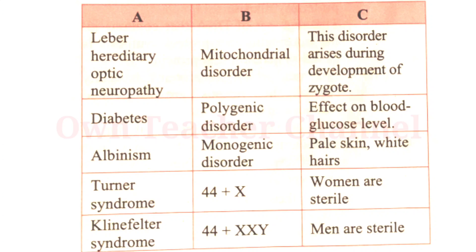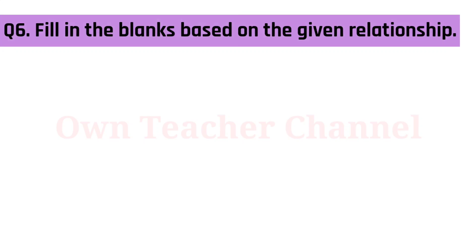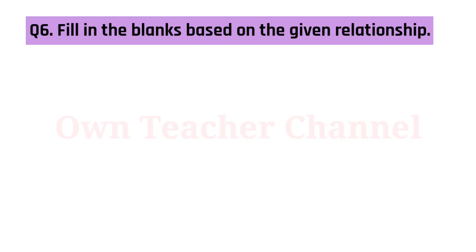Four: Turner syndrome — 44 plus X — women are sterile. Five: Klinefelter syndrome — 44 plus XXY — men are sterile.